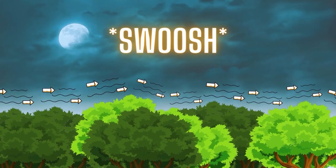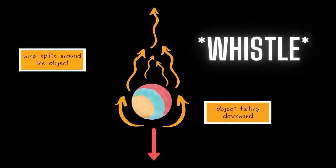Strong winds can also force objects to fall off of trees or buildings. As the wind blows around the falling object, it splits in half, which alters sound waves. Large falling objects create a whistle.